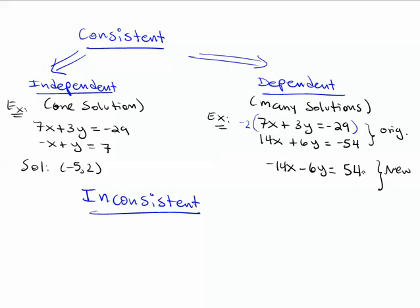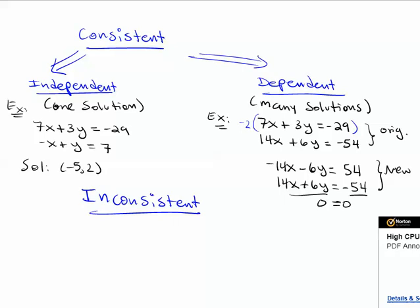You have a consistent dependent system when, as you try to solve, you come across an equation where both sides are the same — you get 0 = 0 or 1 = 1. When that happens, you have this type of system.